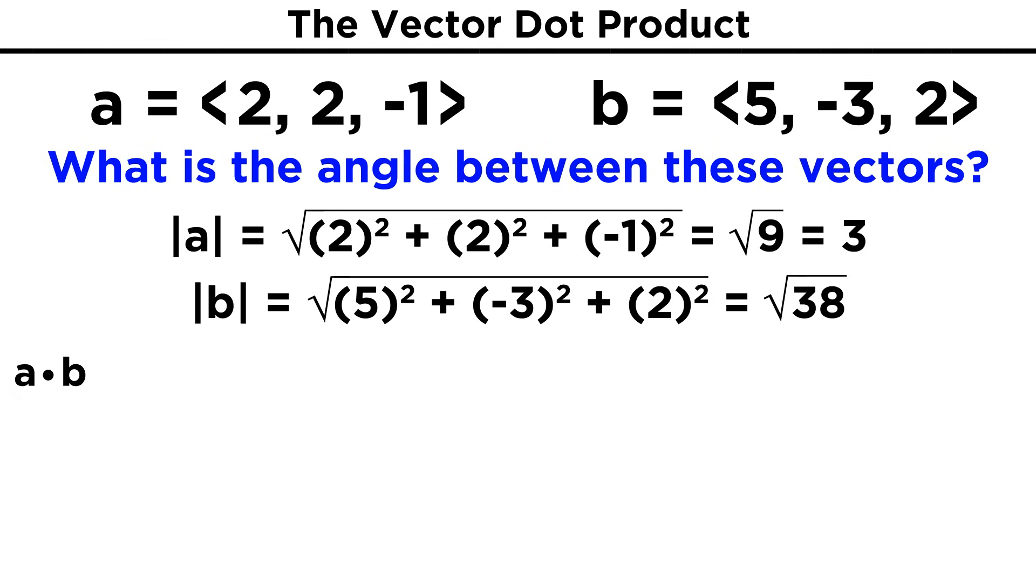Multiplying the corresponding components, we get two times five, plus two times negative three, plus negative one times two, that's ten minus six minus two, or two.